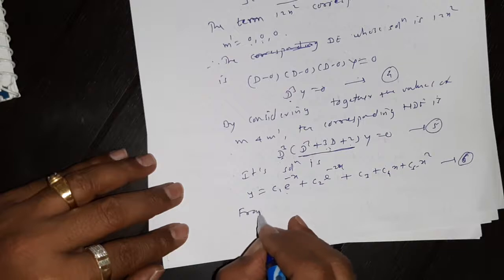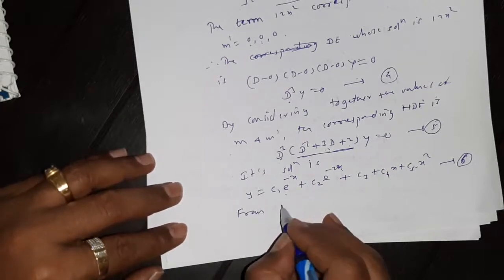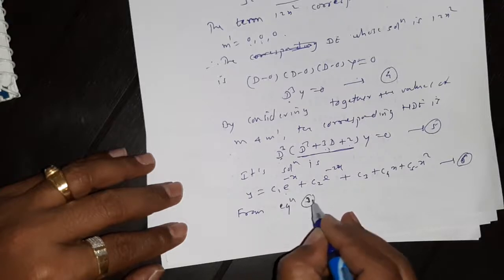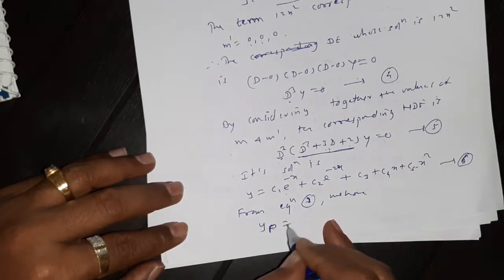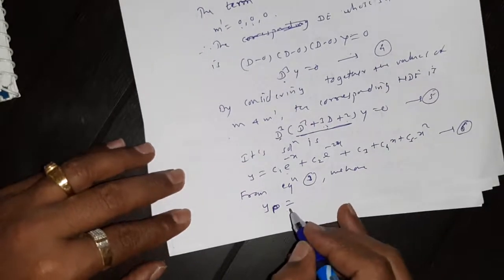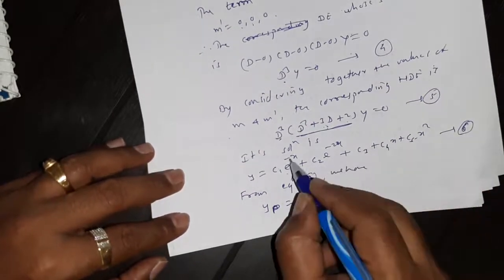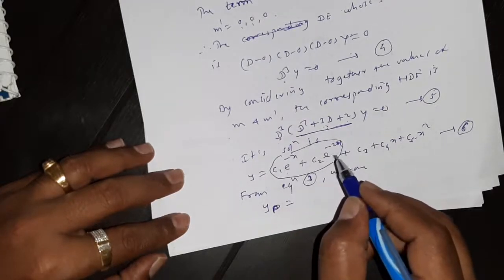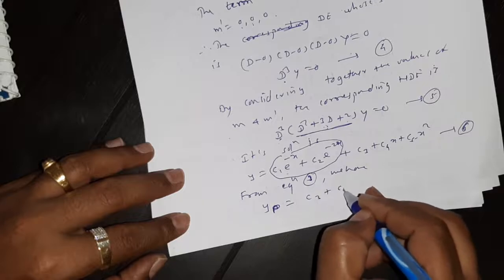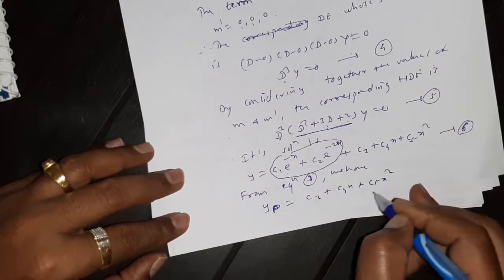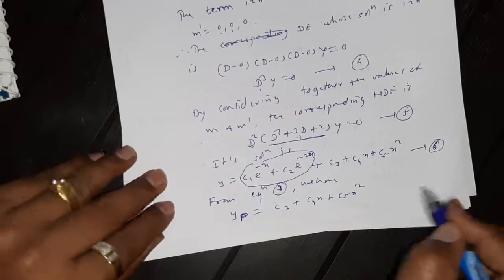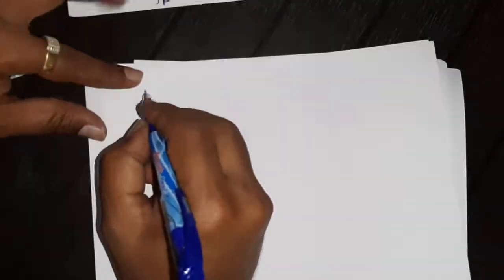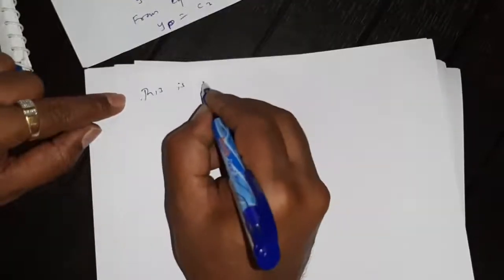From equation 1 and equation 3, the particular integral yp is obtained from equation 6 by deleting the complementary function part. The remaining part is c3 + c4·x + c5·x², which is the particular solution of the given differential equation. This is the particular integral of equation 1 with proper choice of constants c3, c4, c5.